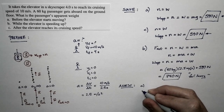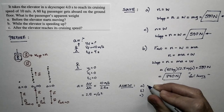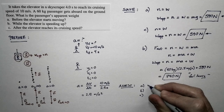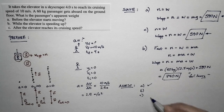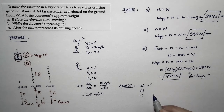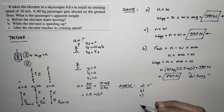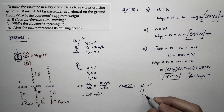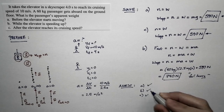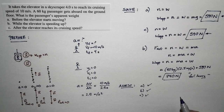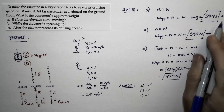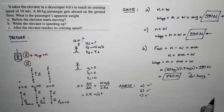In cases A and C, our expectations match the answers: apparent weight equals actual weight. In case B, you feel heavier, which also matches expectations. Our assessment shows the actual answers to the problem match our expectations of the way the world works.